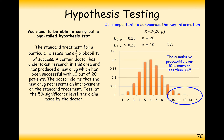If this probability is more than 5%, there's enough random chance that 10 patients recovered when P = 0.25, so we don't conclude the probability has increased. But if the probability of this tail is less than 5%, that's really rare, and there must be some explanation — namely that the probability of getting better is now greater than 0.25.